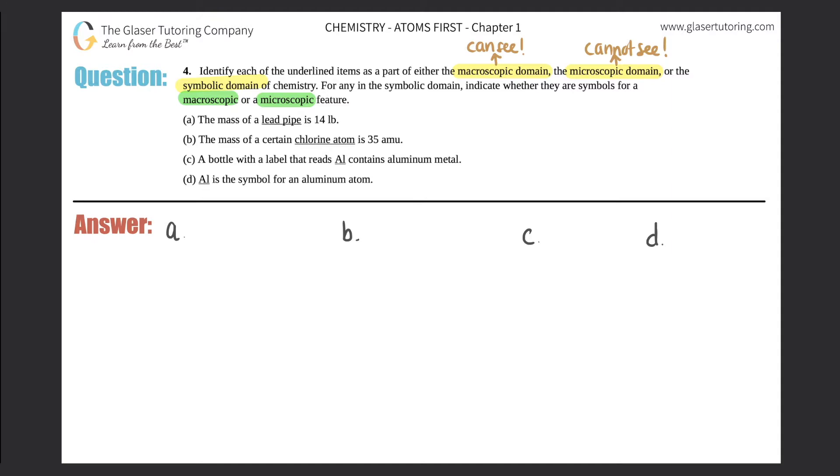Symbolic domain is if we use symbols for words. So in the chemistry world, our symbols are represented by either compounds or elements. It would be any symbol on the periodic table: aluminum, carbon, nitrogen—all these symbols, the one or two letter code for each individual element. So if we automatically see a symbol, it's automatically part of the symbolic domain, and then we just got to see whether it's macroscopic or microscopic.